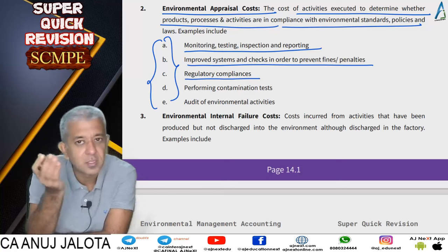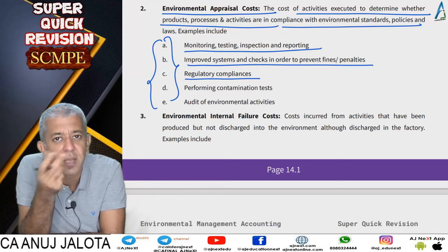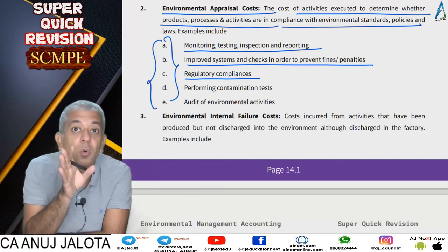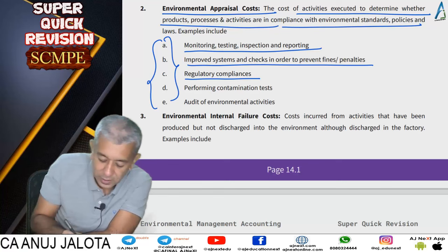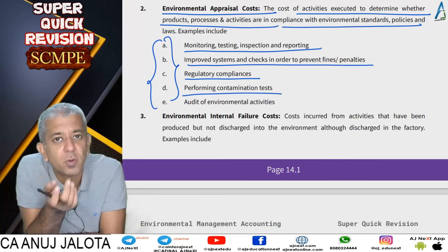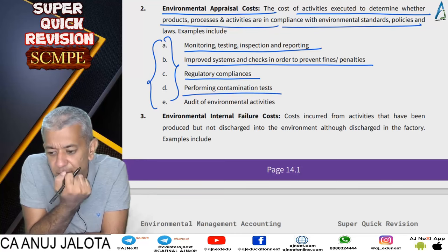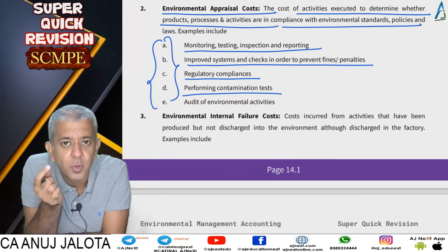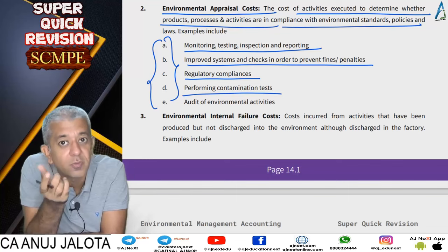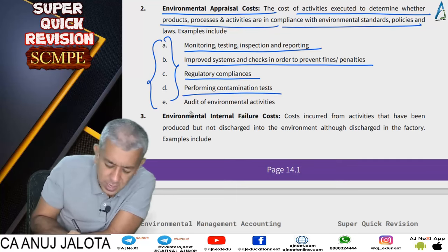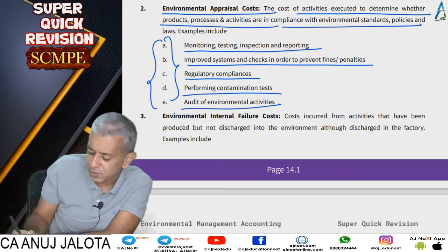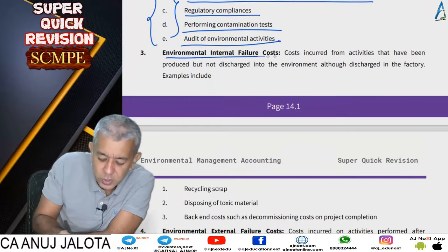Examples of appraisal costs include regulatory compliances - for instance, the government requiring you to report how much carbon was emitted because of your activities. Also included are performing contamination tests, for example if you discharge waste into a river you perform a contamination test to find out how much the river got polluted due to your activities. Audit of environmental activities is also an appraisal cost, as audits are always done at the end of a certain period.